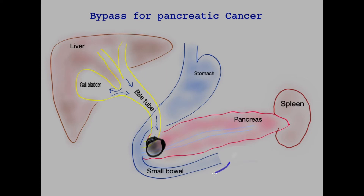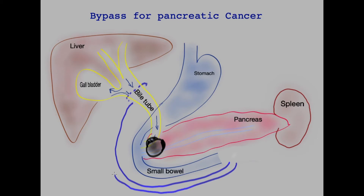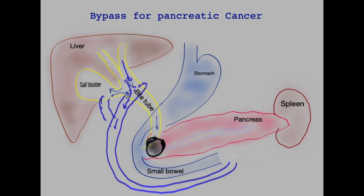Typically it would mean bringing a loop of small bowel as drawn over here, dividing the bile tube and then making a new join with this loop of small bowel so that the direction of flow of the bile is redirected rather than going down through the obstruction, and that's how jaundice would be relieved. Rarely surgeons may opt to perform the bypass to the gallbladder itself, but it's important to ensure that the bile is able to flow in this direction.